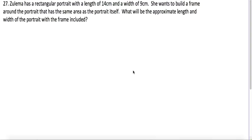So we're given that we have this rectangular portrait with a length of 14 centimeters and a width of 9 centimeters. We want to build a frame around the portrait that has the same area as the portrait itself and then know the new length and width of the portrait with the frame included.